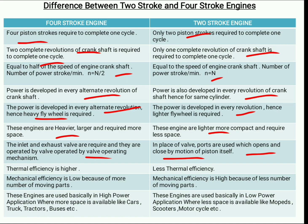Thermal efficiency is high in 4 stroke engines and lower in 2 stroke engines. Thermal efficiency is the amount by which heat energy is converted into mechanical work. Regarding mechanical efficiency, 4 stroke engines have lower mechanical efficiency due to a greater number of moving parts, whereas 2 stroke engines have higher mechanical efficiency due to fewer moving parts. Mechanical efficiency depends on friction — more moving parts means more friction, more power loss, and lower mechanical efficiency.